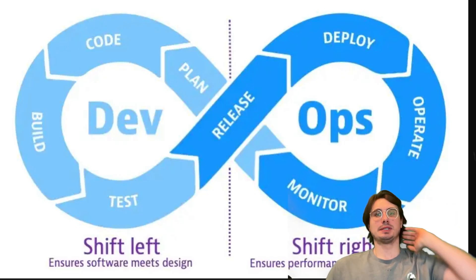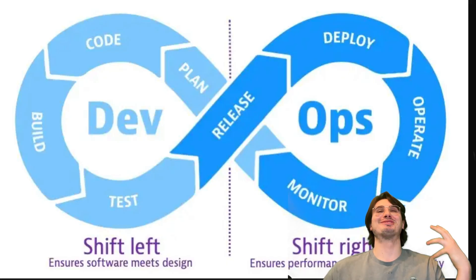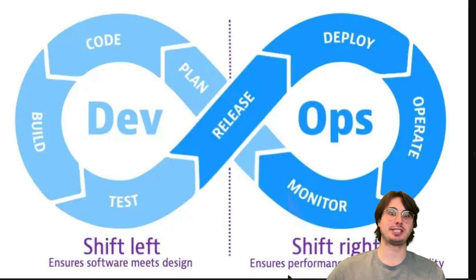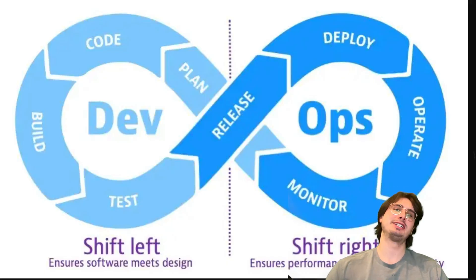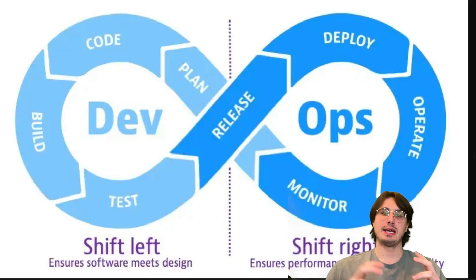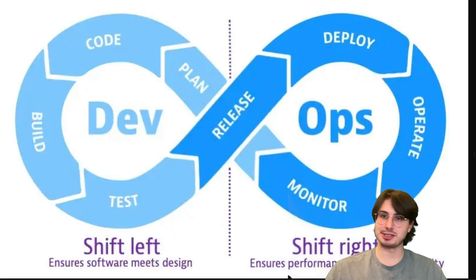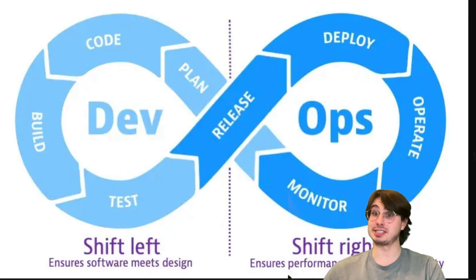This revolution has resulted in the citizen data engineer. As automation and abstraction increase — now you can build a data pipeline with a couple of sentences in ChatGPT — it's a lot more feasible for domain experts like business analysts, operations leads, and marketing managers to build and manage their respective parts of the pipeline. And that has given rise to the citizen data engineer.